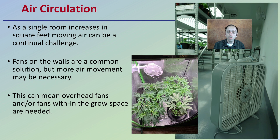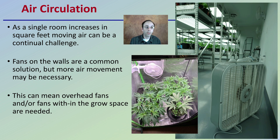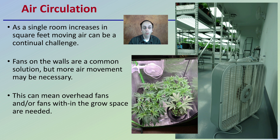Now, also very important is air circulation. As a single room increases in square feet, moving air can be a continual challenge. Fans on the walls are a common solution, but more air movement may be necessary, meaning overhead fans and fans within the grow space might be needed. We can see here there are some on the walls, but there are also some down here on the floor.